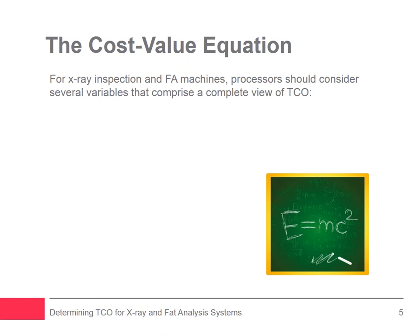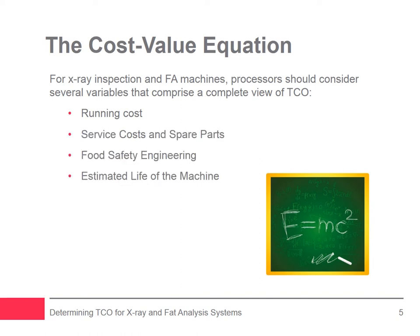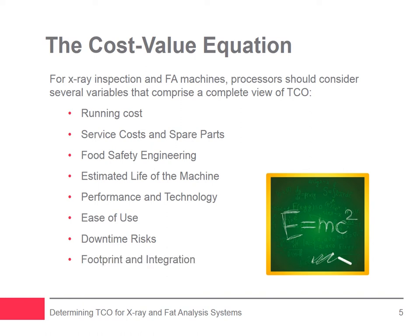For X-ray inspection and FA machines, processors and CPG companies should consider several variables that comprise a complete view of TCO. These are: running cost; service costs and spare parts; food safety engineering; estimated life of the machine; performance and technology; ease of use; downtime risks; and footprint and integration.